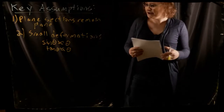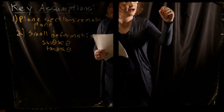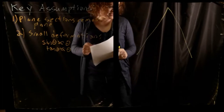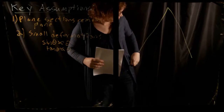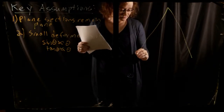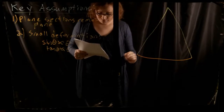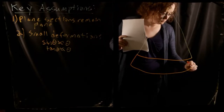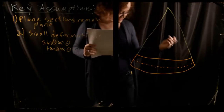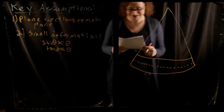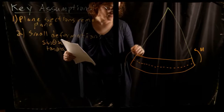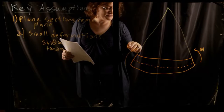So first I want to define a few things. We're going to look at a section of beam that is undergoing some rotation. Let's say we have a beam that is undergoing some bending. This beam has a thickness and a certain neutral axis. This beam is bending under the influence of some moment M, and it's undergoing a certain amount of rotation.